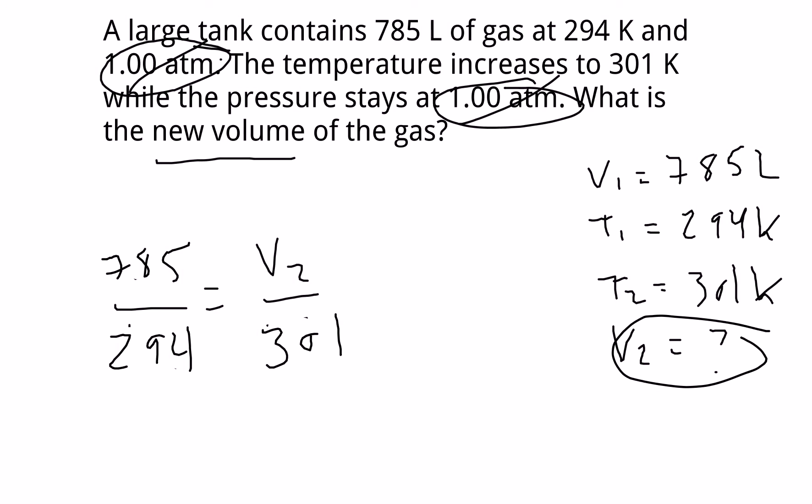So what I would need to do is cross-multiply. I have 785. I'm going to take that times the 301. And if I do that, it comes out to 236,285.